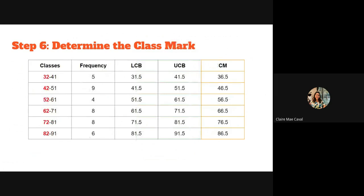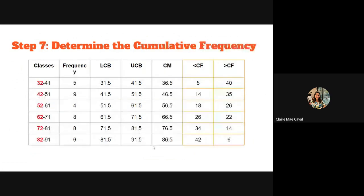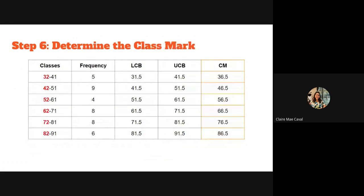Step 6: determine the class mark. The class mark is the middle value or average of a class interval. For the first interval 32 to 41: 32 plus 41 divided by 2 equals 36.5. For the second interval 42 to 51: 42 plus 51 divided by 2 equals 46.5. And so on for each interval.